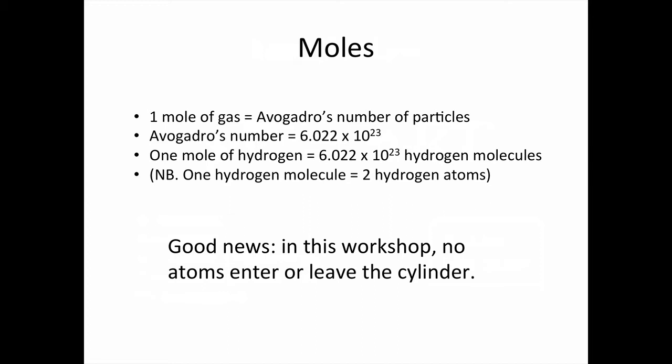So if I have a sample of 2.016 grams of hydrogen, I could say that there are 6.022 by 10 to the 23 hydrogen molecules, or I can just say that is one mole of hydrogen molecules. The good news for this workshop is no atoms enter or leave the cylinder in these problems, so n is constant.